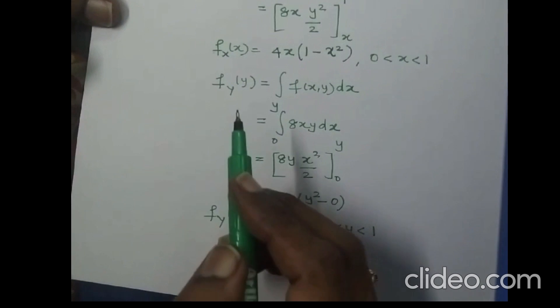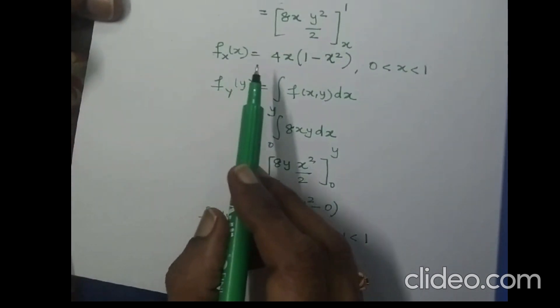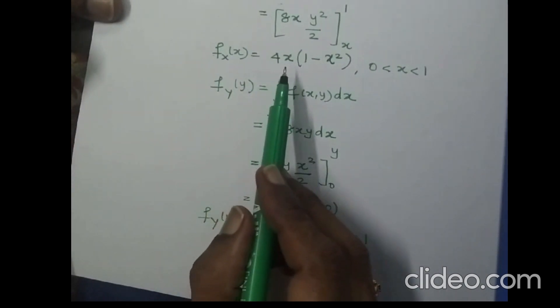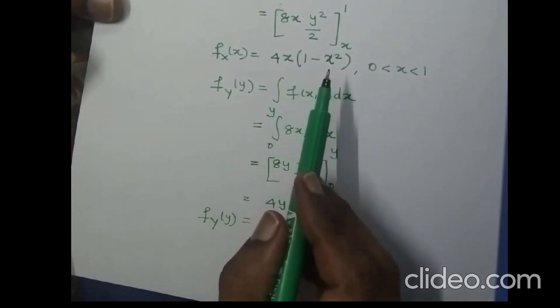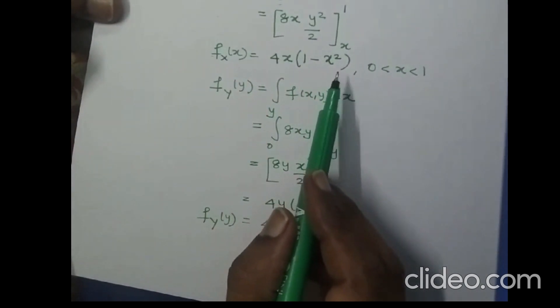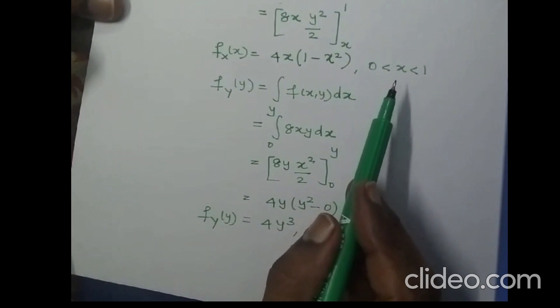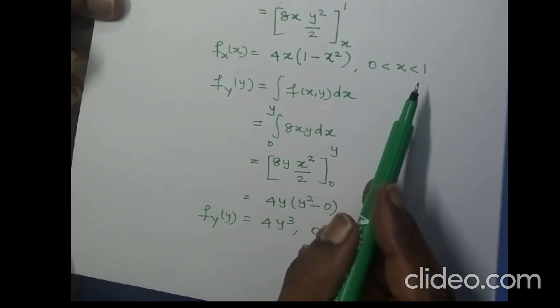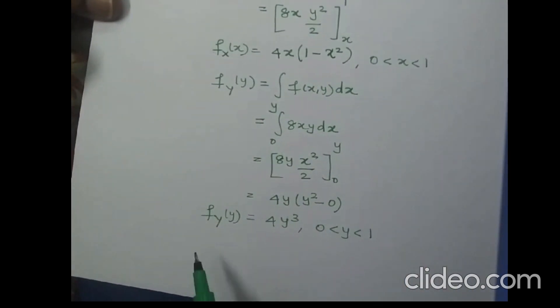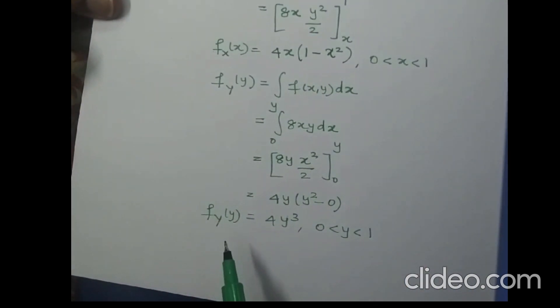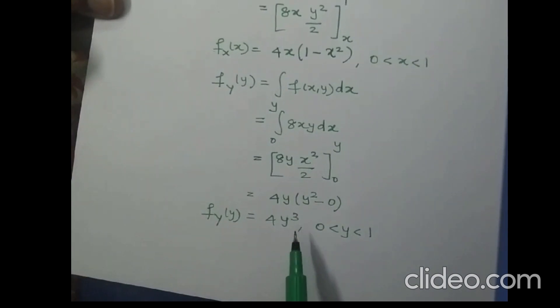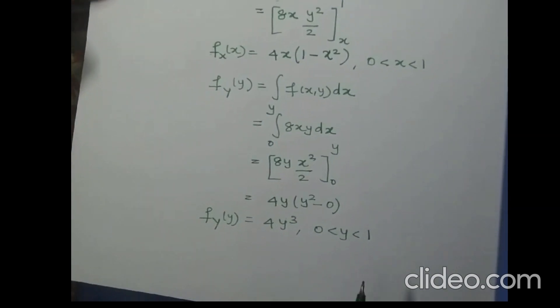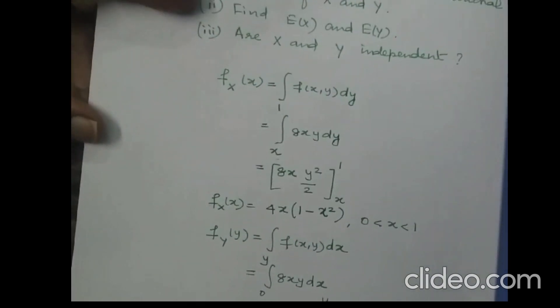To summarize: the marginal density function of x is fx(x) = 4x(1 − x²) for 0 < x < 1, and the marginal density function of y is fy(y) = 4y³ for 0 < y < 1. Now we need to find E(X) and E(Y).